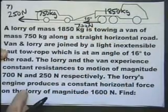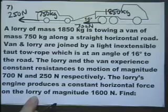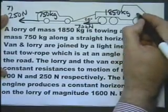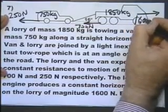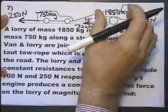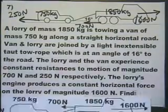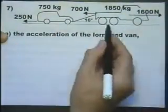The lorry's engine produces a constant horizontal force, magnitude 1600, so the engine on this lorry trundling away and produces that much pull. That's the total force, and it's constant. So here we have all of our information.